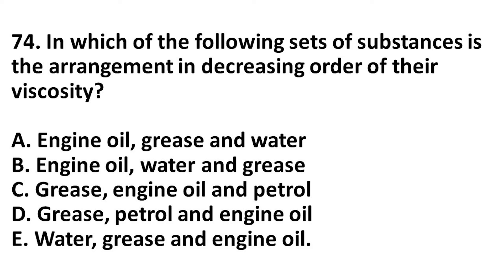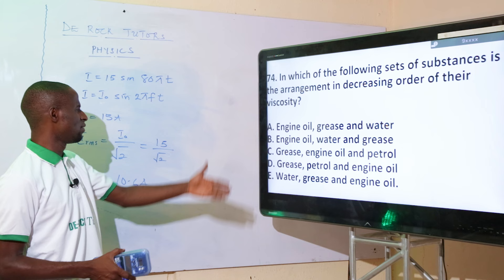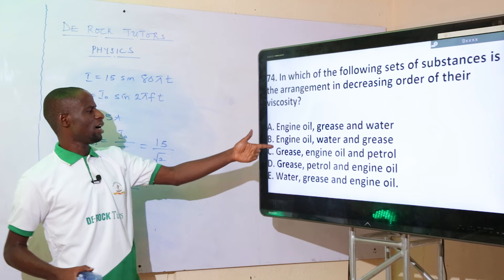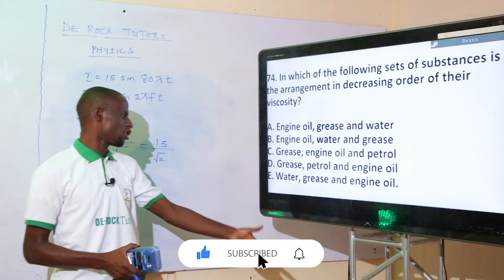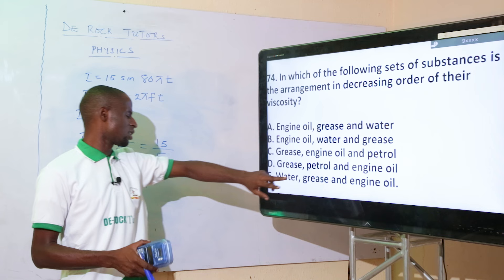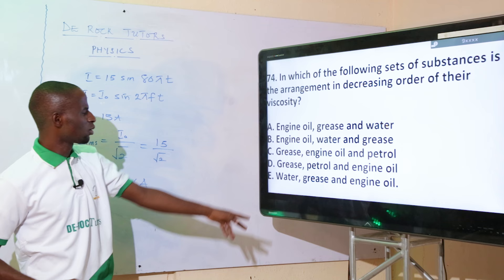In which of the following sets of substances is the arrangement in decreasing order of viscosity? From highest to lowest viscosity: we know grease is more viscous than engine oil, and engine oil is more viscous than petrol. Option C — grease, engine oil, and petrol — is correct. Option A (engine oil, grease, water) is wrong because grease is more viscous than engine oil. Option D (grease, petrol, engine oil) is wrong because petrol is less viscous than engine oil. The correct option is option C.